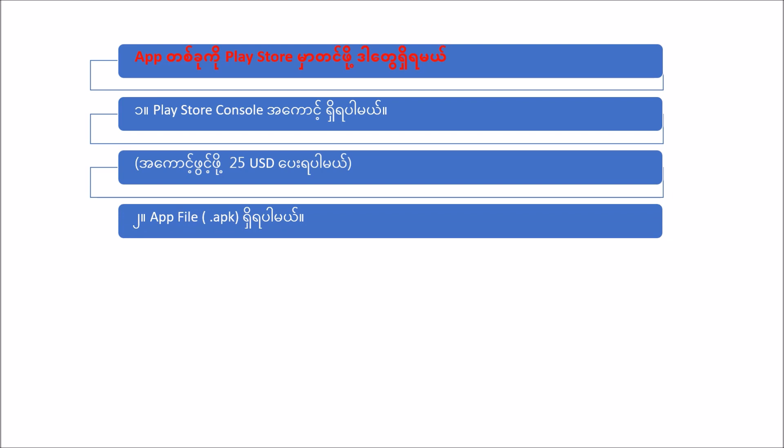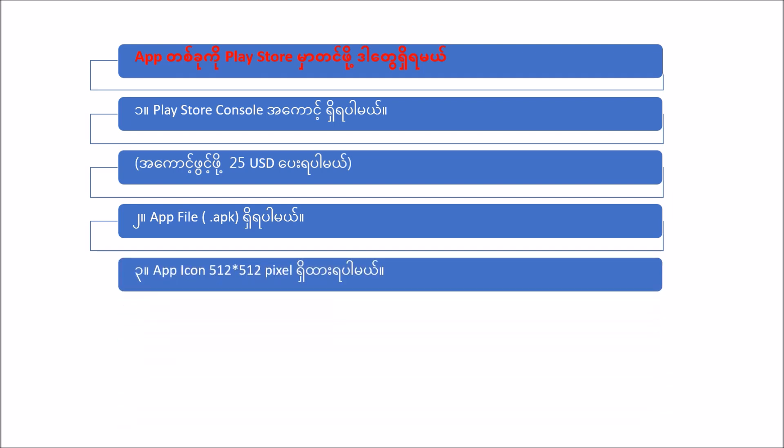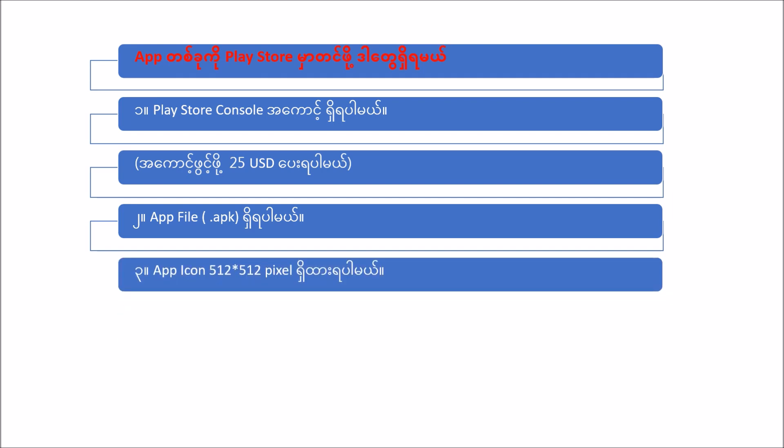So if you want to use the application, you can use the application file. The application file extension is dot APK — an Android application. There is also an iOS application solution and an app store place to account, with a CV application file and CV solution.